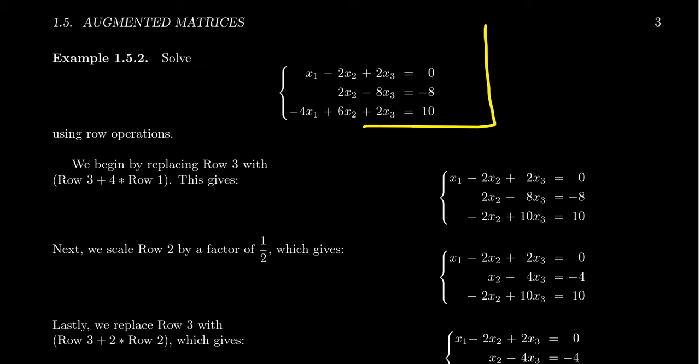And so, what I'm going to do is start performing some row operations. Not exactly motivating why, I just want to demonstrate to you how do you actually do the row operations. So, with this system right here, we're going to take this system of equations. And I want to perform the following row operation. We're going to replace row 3 with row 3 plus 4 times row 1. So, this is a replacement operation. Row 3 is going to be replaced with row 3 plus 4 times row 1.